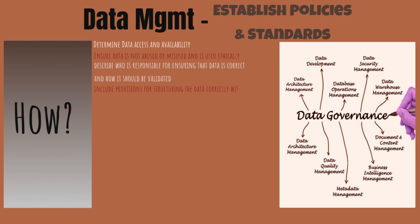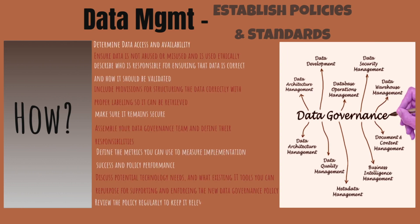To implement data governance: determine data access and availability; ensure data is not abused or misused and is used ethically; describe who is responsible for ensuring that data is correct and how it should be validated; include provisions for structuring the data correctly with proper labeling so it can be retrieved; and make sure it remains secure.